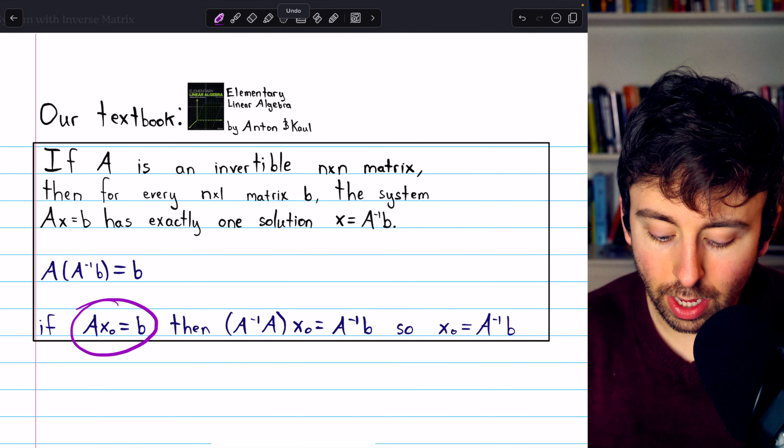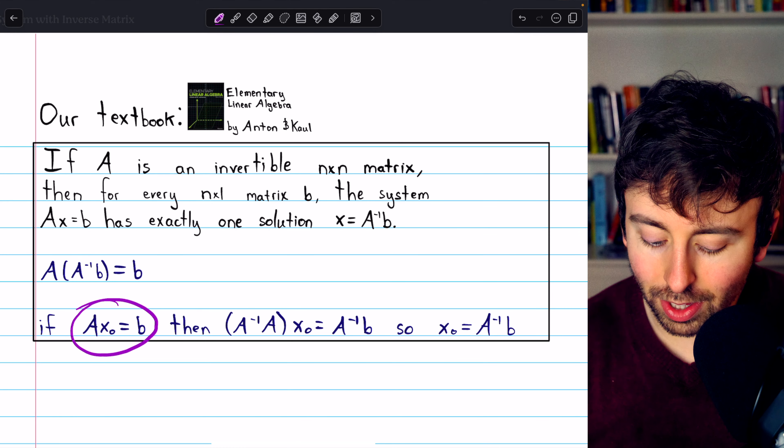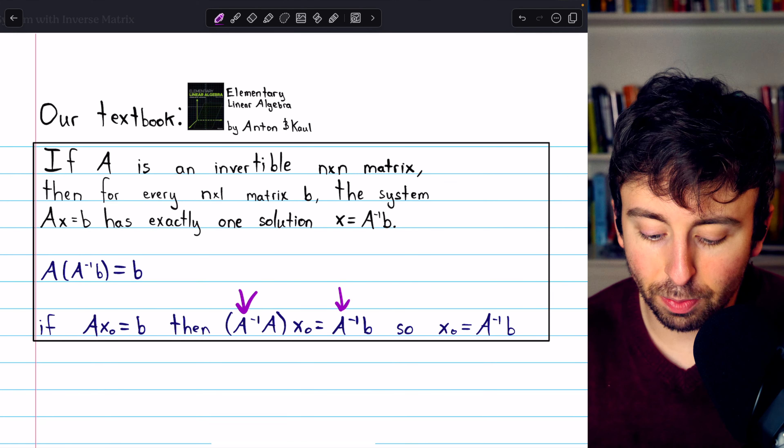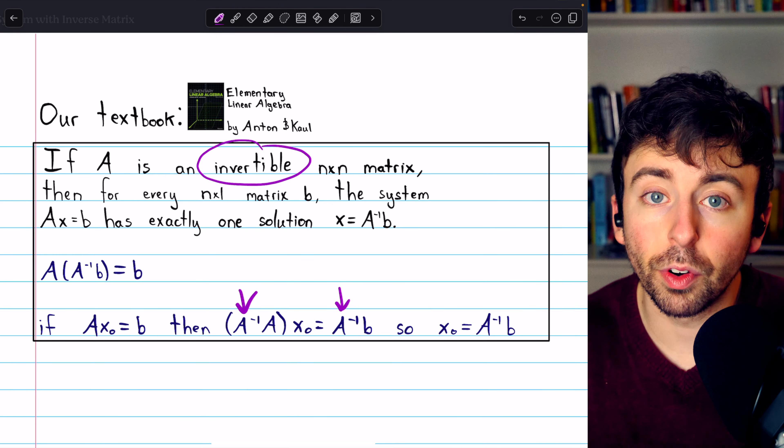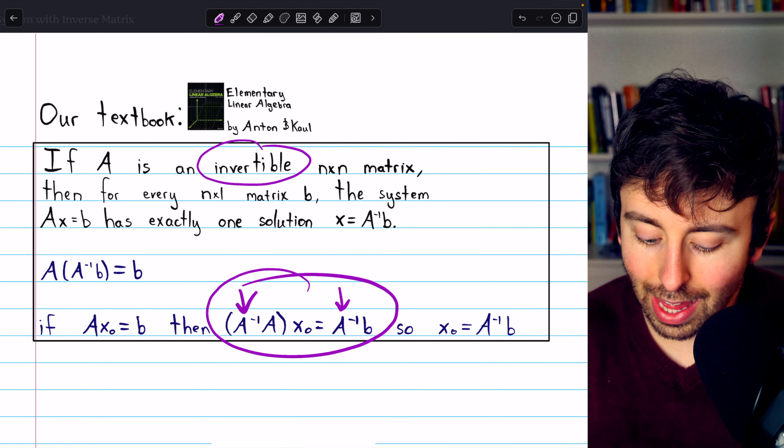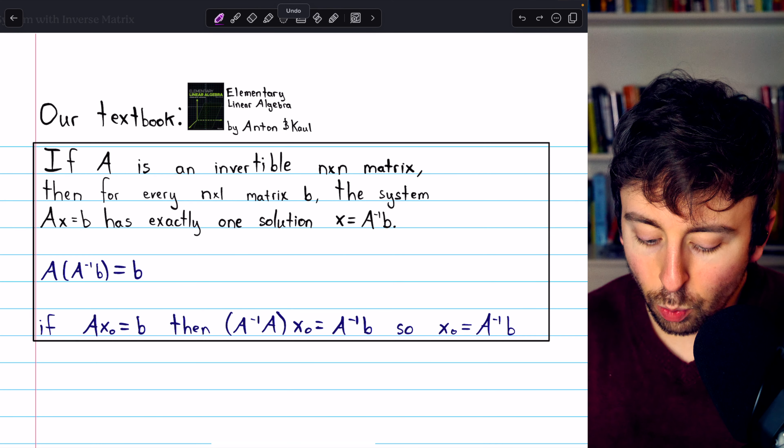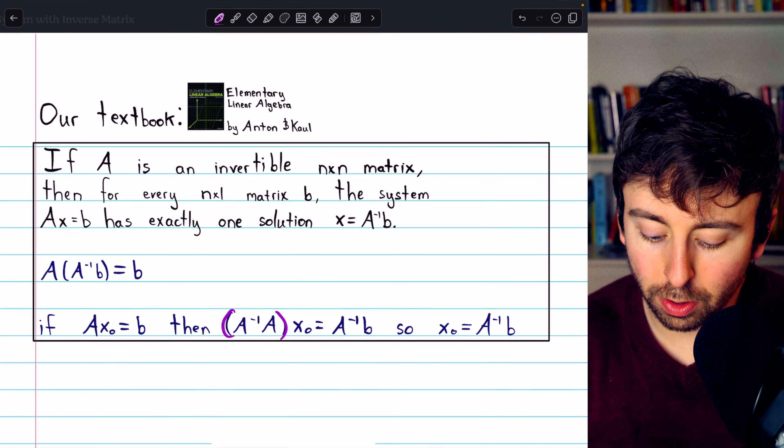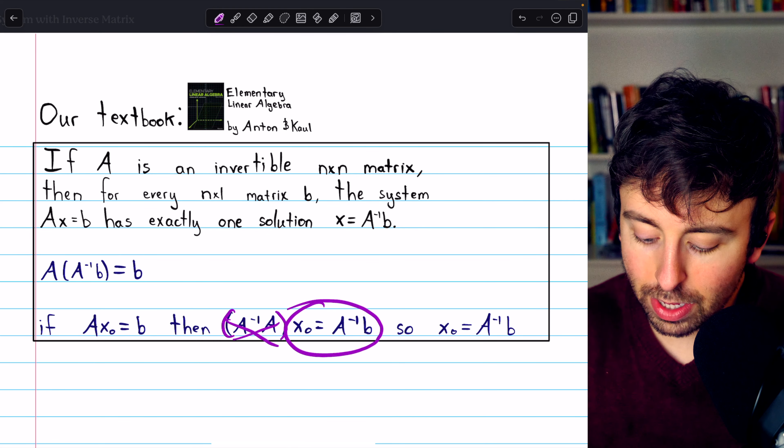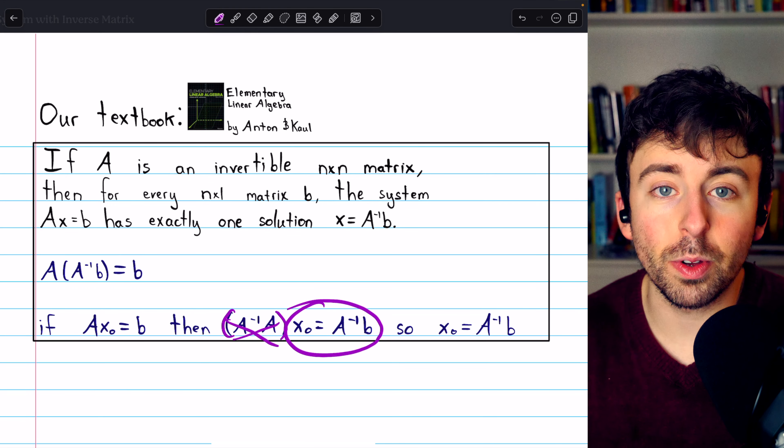Starting from this equation, multiply both sides on the left by A inverse. We know that A inverse exists, because this is a statement about invertible matrices. Now, if we multiply both sides on the left by A inverse, we again compare A inverse with A, they cancel out, and we're left with x0 equals A inverse B.